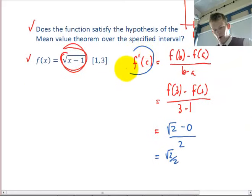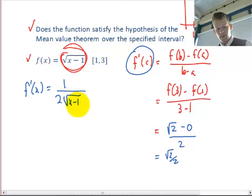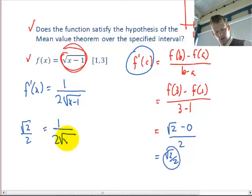So, let's work on this side. I'm going to take the derivative of the function, and that will be 1 over 2 root x minus 1. I'm going to set that equal to what I found when I did the slope between the endpoints. So, I have root 2 over 2 equals 1 over 2 root x minus 1.